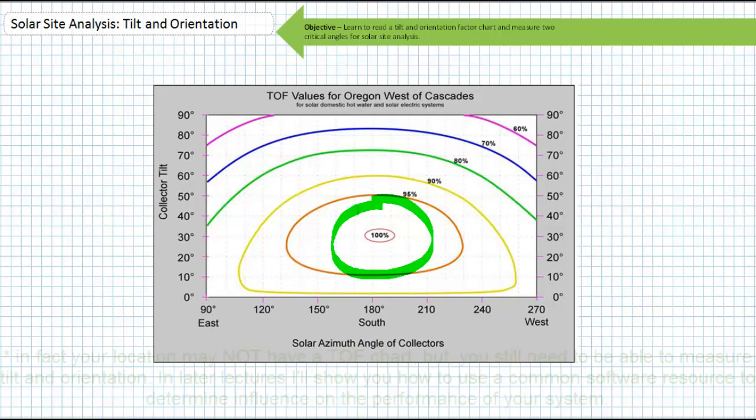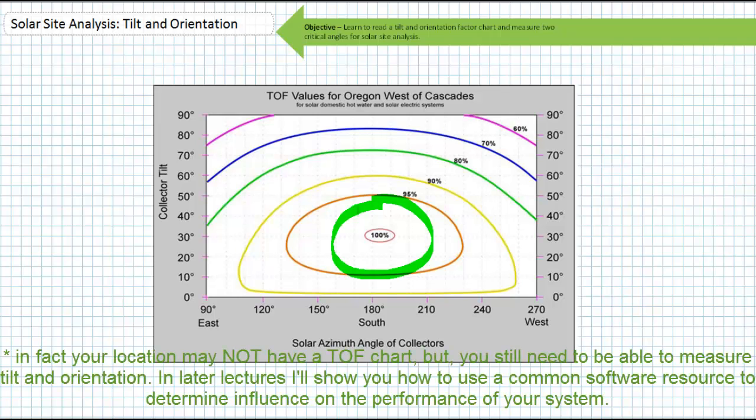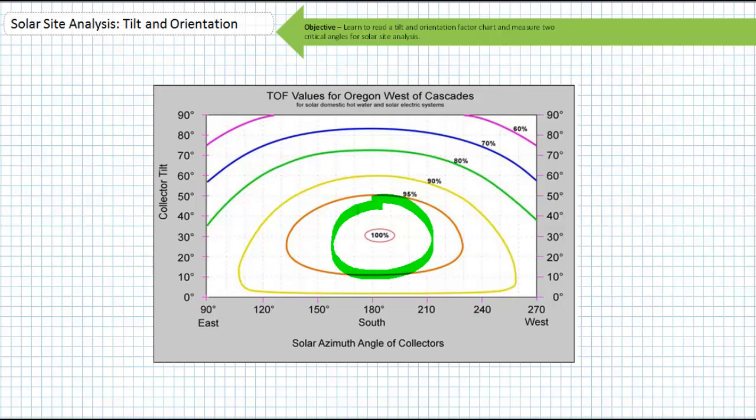Measuring both tilted orientation is the hard part. How does one obtain the angular values for tilted orientation with a reasonable degree of accuracy? More importantly, how does one do this without falling off your roof?